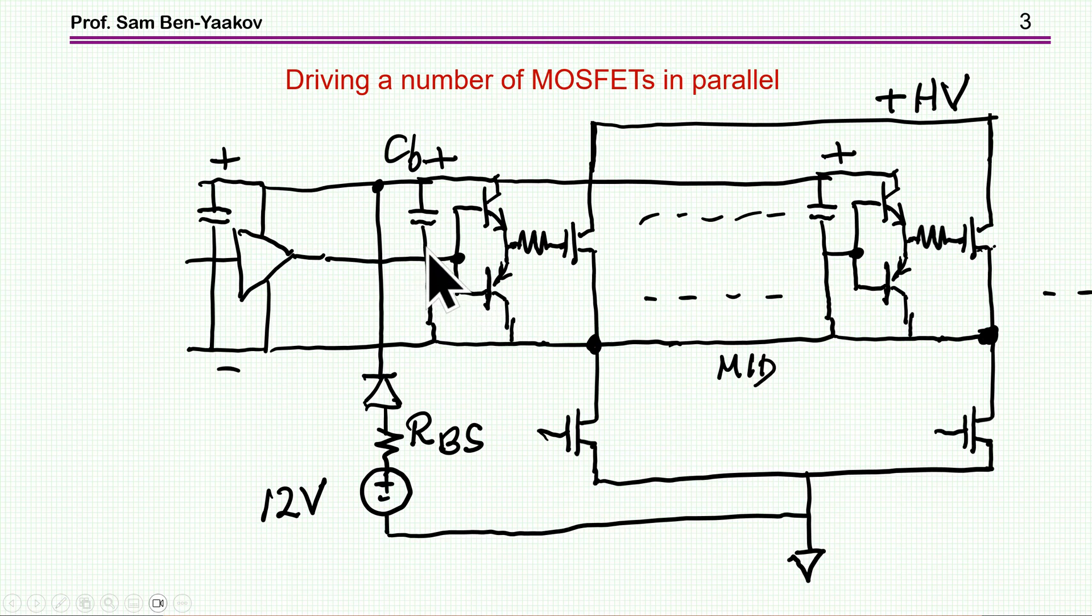It delivers the charge to the gate as well as the power to the driver. During the time that this midpoint is at low level, the capacitor is recharged from this power supply, which is referred to ground, through the diode to the capacitor. When this high side is at high potential, the diode is blocked and there is no connection here.